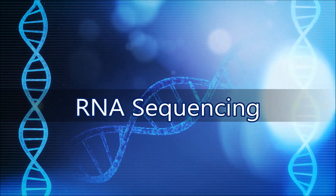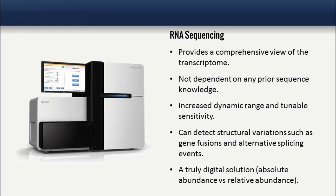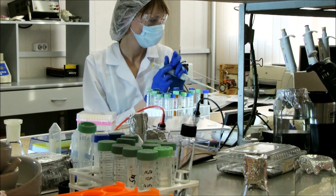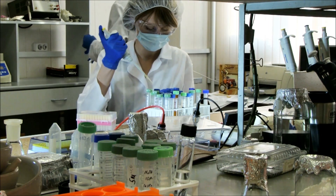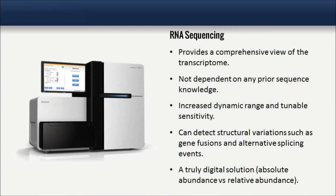The sequencing strategy provides a comprehensive view of the transcriptome because it is not dependent on any prior sequence knowledge. Instead, every single transcript in the sample is sequenced, known or unknown. This enables the identification of structural variations such as gene fusions and alternative splicing events, as well as novel genes and transcripts. Sequencing data can also be reanalyzed when new discoveries are made, whereas microarrays would need to be rerun in order to take advantage of new sequence information.